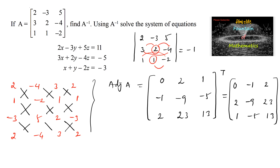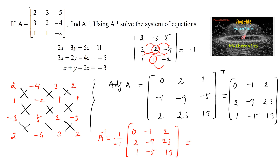A inverse equals 1 over the determinant (which is -1) times the adjoint matrix [0, -1, 2; 2, -9, 23; 1, -5, 13]. Taking -1 inside, this becomes [0, 1, -2; -2, 9, -23; -1, 5, -13]. This is A inverse.